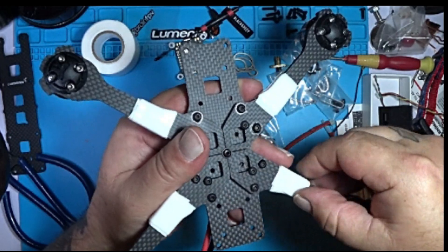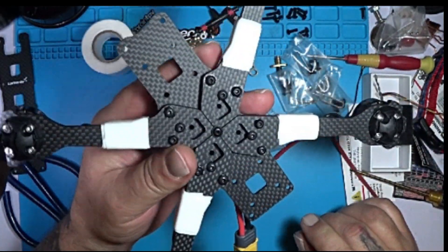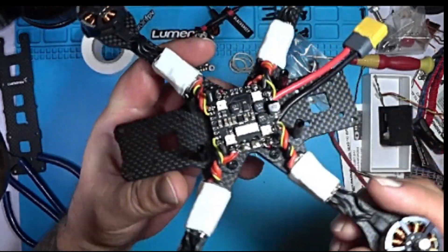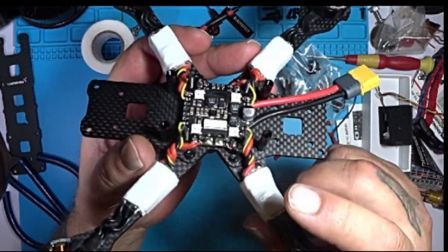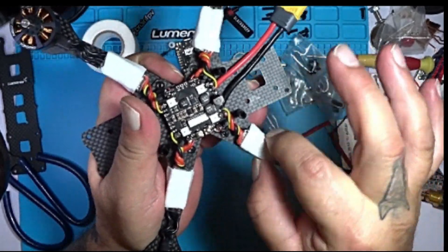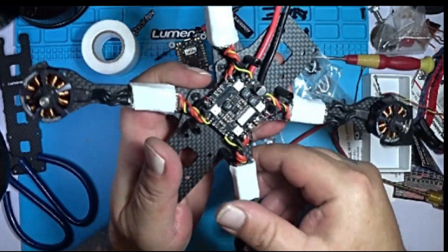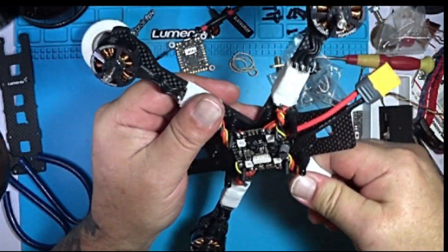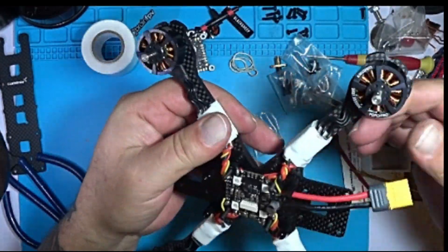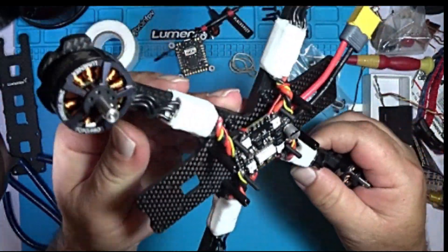As you can see now, it's isolated. It's silicone so it's vibration dampening, and it holds the ESCs in very securely. It's completely waterproof and electrical-proof, and it won't ground to the frame or anything like that.